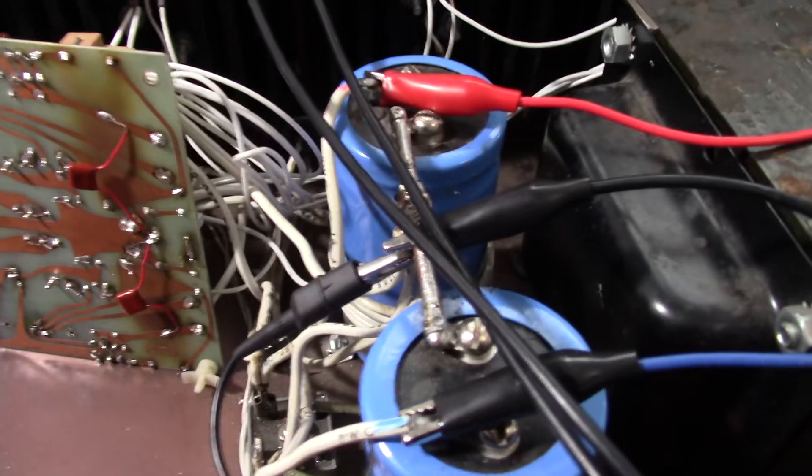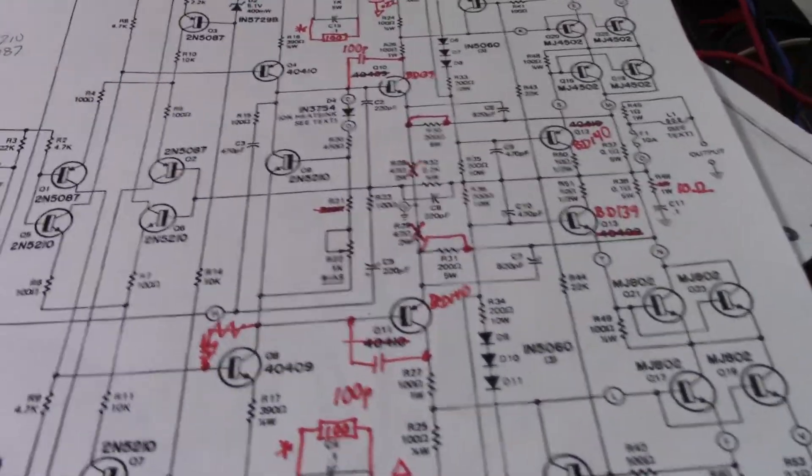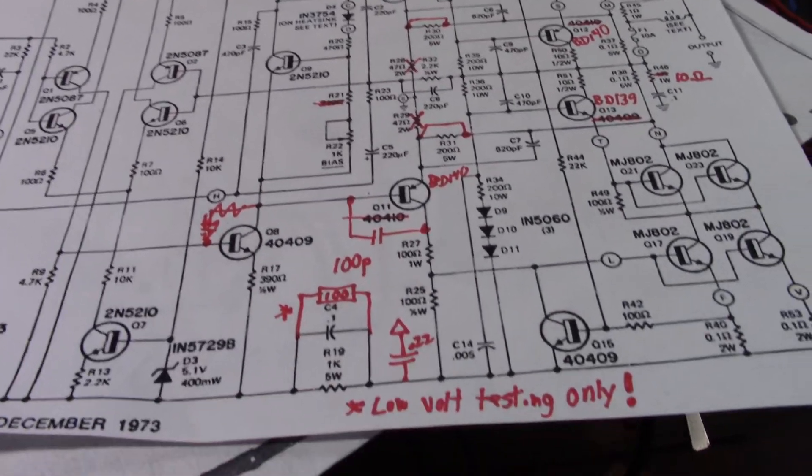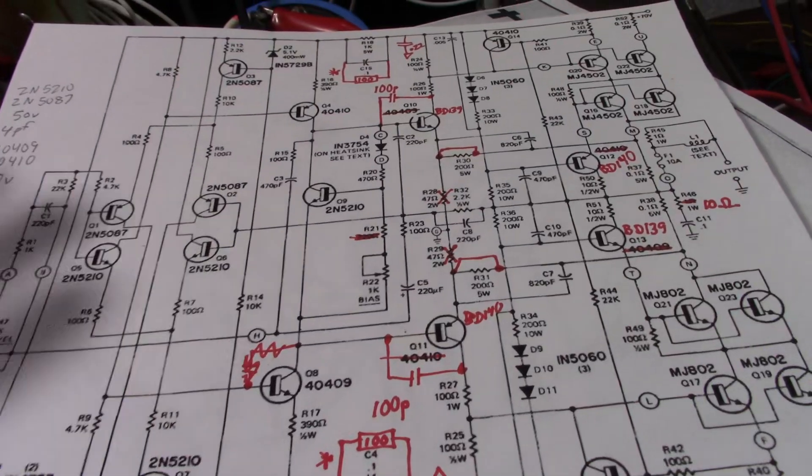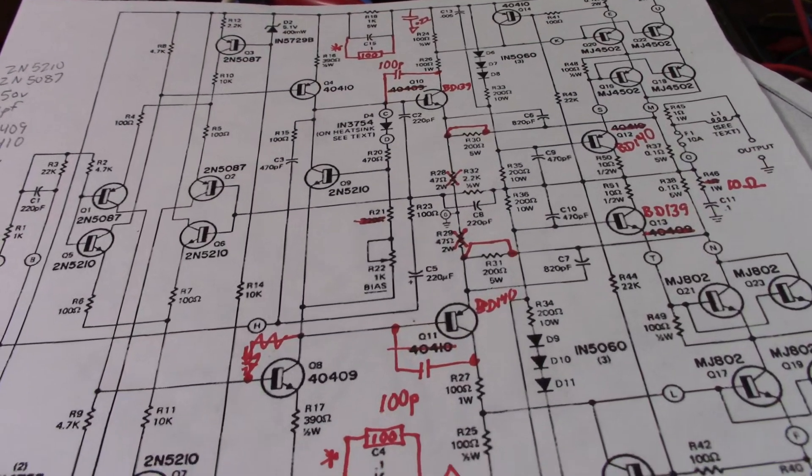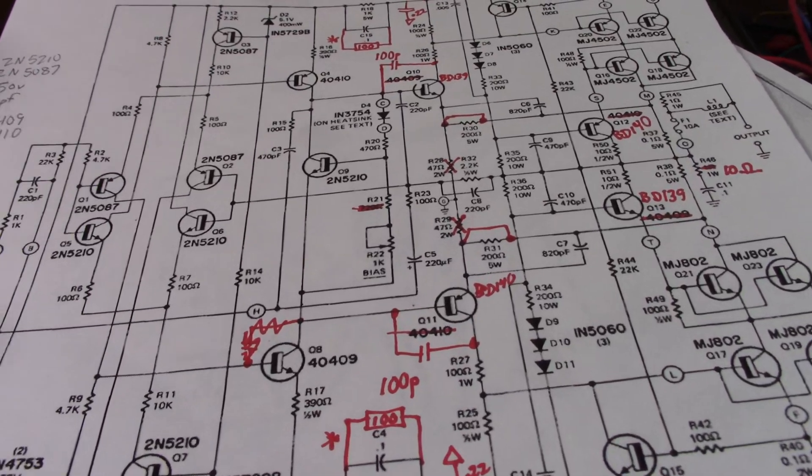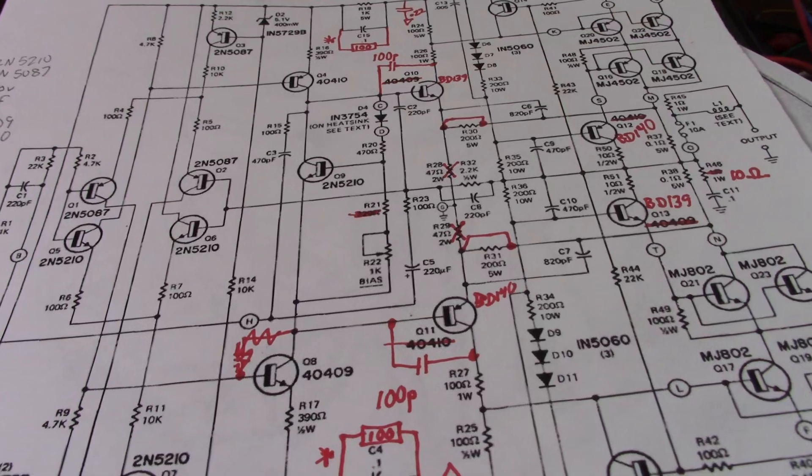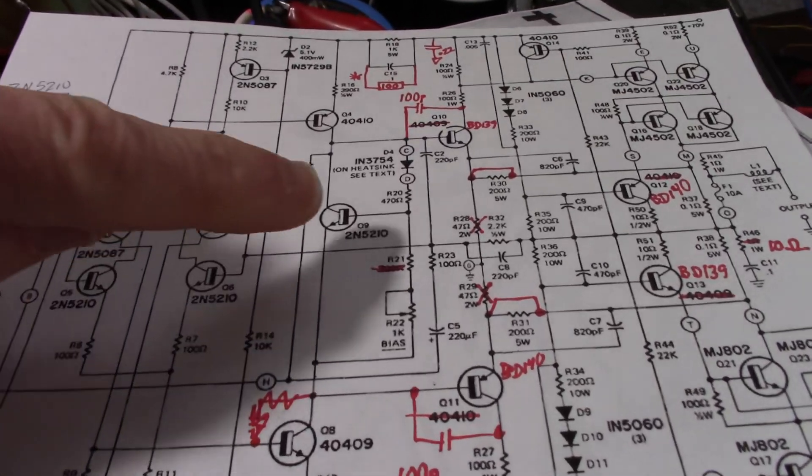But what about the stability now? What did I do to this thing? Let's look at the schematic here. So here we go with the schematic. Here's some things I did. I do things the way I want to do things. You can do things the way you want to do it. Who's right? Maybe you're right. Maybe I'm wrong. Maybe it's the opposite. It's just the way it is.